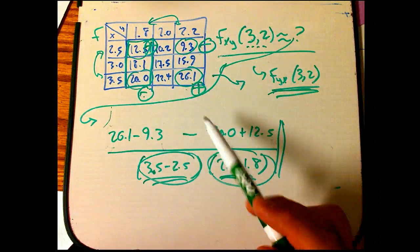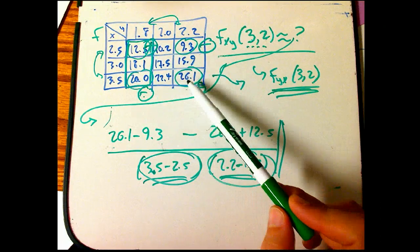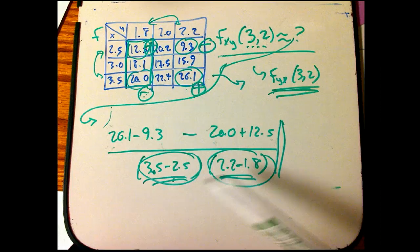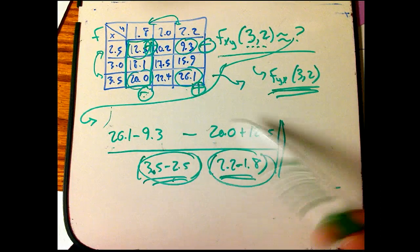So this formula for the mixed partial, where you just take the four corners, plus, plus, minus, minus, and divide by the product of the difference, the delta x and the delta y, is completely symmetric in x and y, is what I'm trying to say.